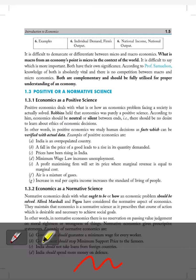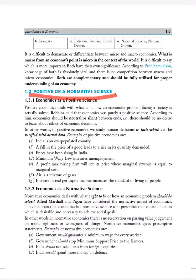Now, positive or normative science. Economics is a positive science or economics is a normative science. It is also a very important topic. Positive economics deals with what is or how an economic problem facing a society is actually solved. Professor Robbins held that economics was purely a positive science. According to him, economics should be neutral or silent between ends. It should be no desire to learn about ethics of economic decisions. He said that there is no desire to learn about the ethics.